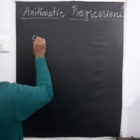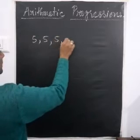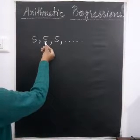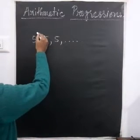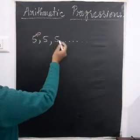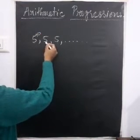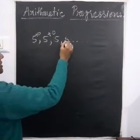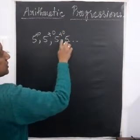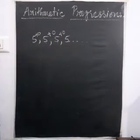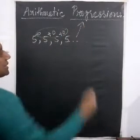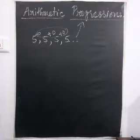Say you have 5, 5, 5, 5, etc. Does this form an AP? Yes. If I subtract the second term minus the first term, I will get 0. The third term minus the second term, once again I will get 0. Similarly, if I keep adding 0, I will get the next terms. So there is a common difference, hence it is an AP.